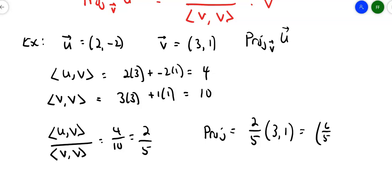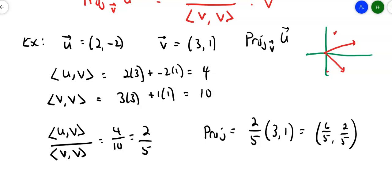What does it look like? Let's draw vector u: 2 over and 2 down. Vector v is 3 over and 1 up. I'm going from u onto v. Does it look like this piece here could be the vector (6/5, 2/5)? Sure — if that's 2, that could be 1 and 1/5, and 2/5 is 4/10. So yeah, it makes sense that that portion of the vector is (6/5, 2/5). That's the projection of u onto v.